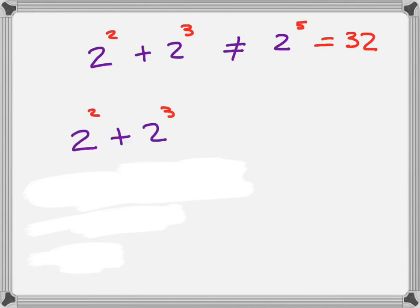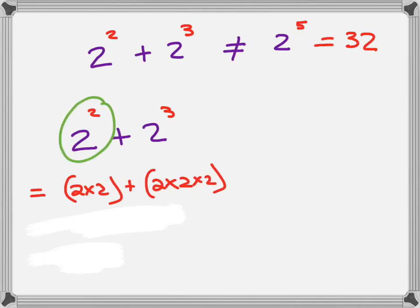Instead, you're going to do it this way. You're going to make your 2 to the power 2, 2 times 2, which is actually what it stands for. And you're going to make your 2 to the power 3, 2 times 2 times 2.